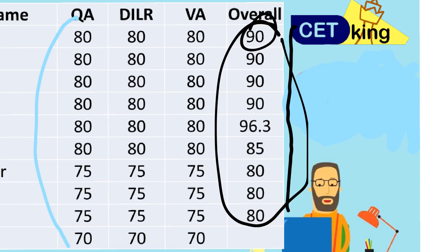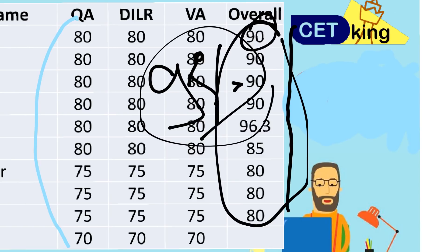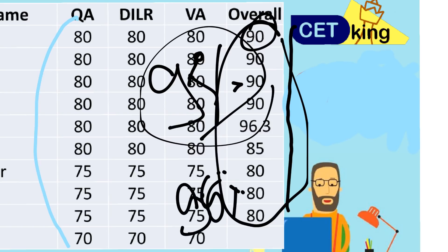My basic thumb rule says: if you are expecting new IIMs, the cut-off can be around 95 percentile. If you are expecting the main IIMs, the cut-off is around 99 percentile. So at least while preparing for the mocks, your target should be 99 percentile, and for new IIMs target 95 percentile.